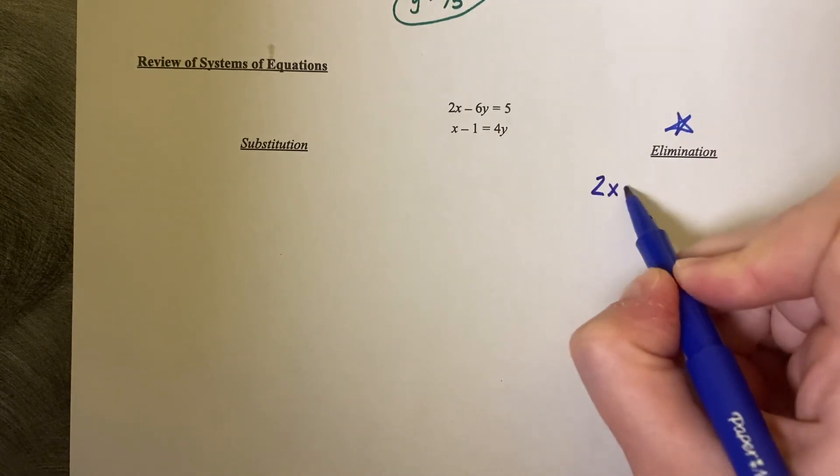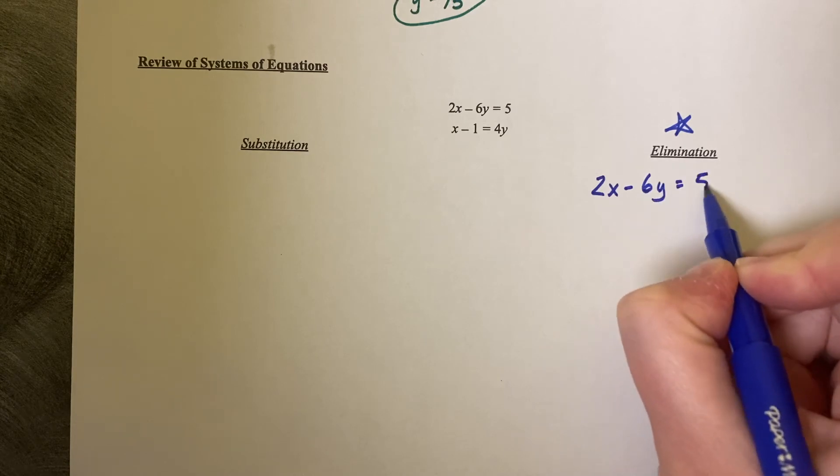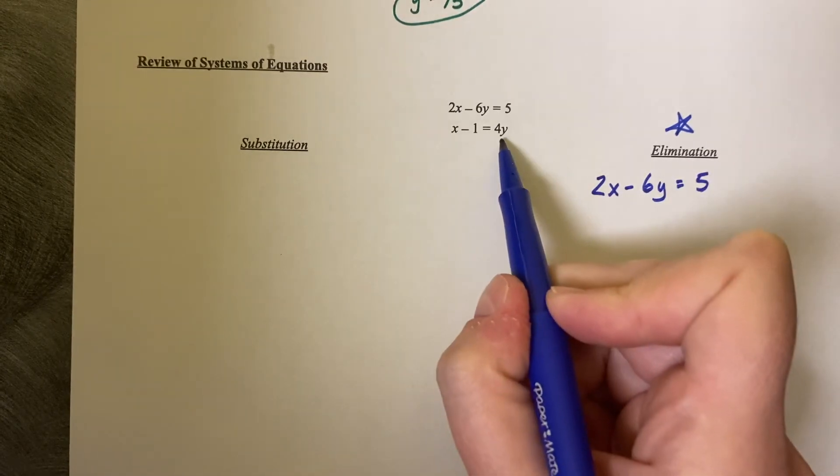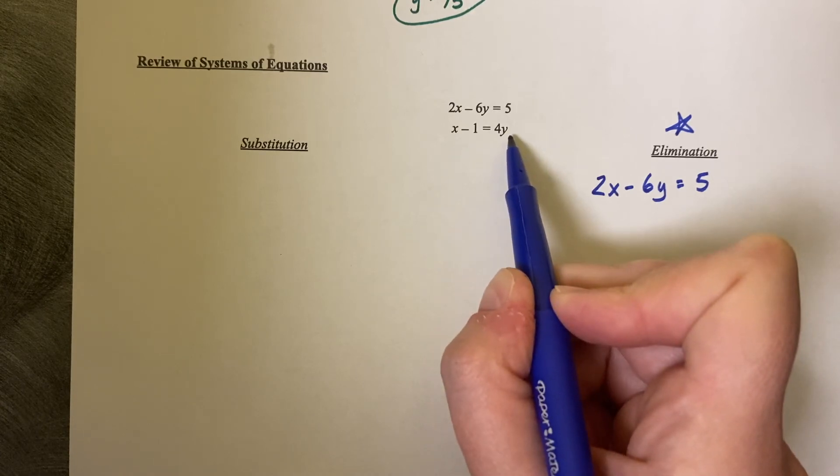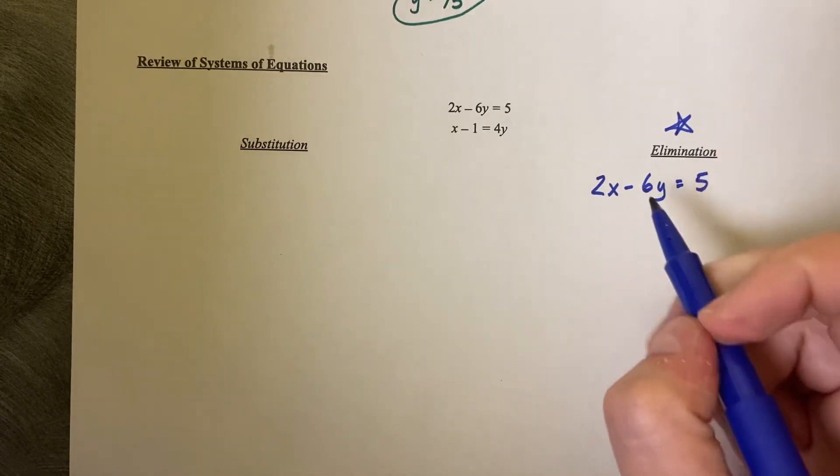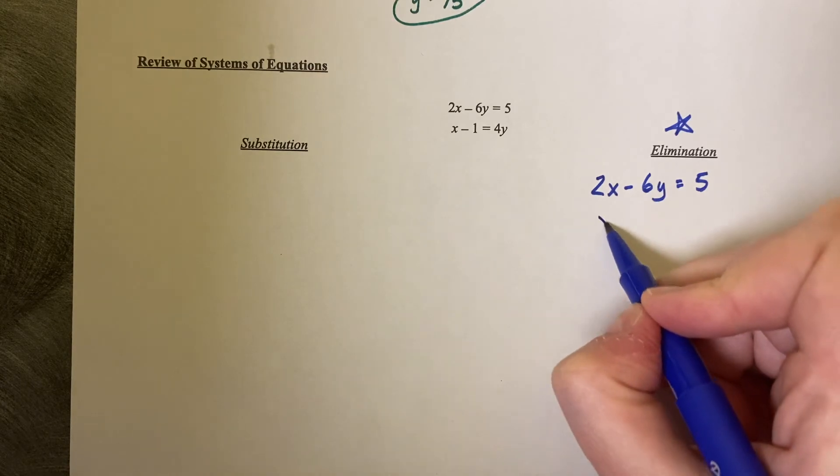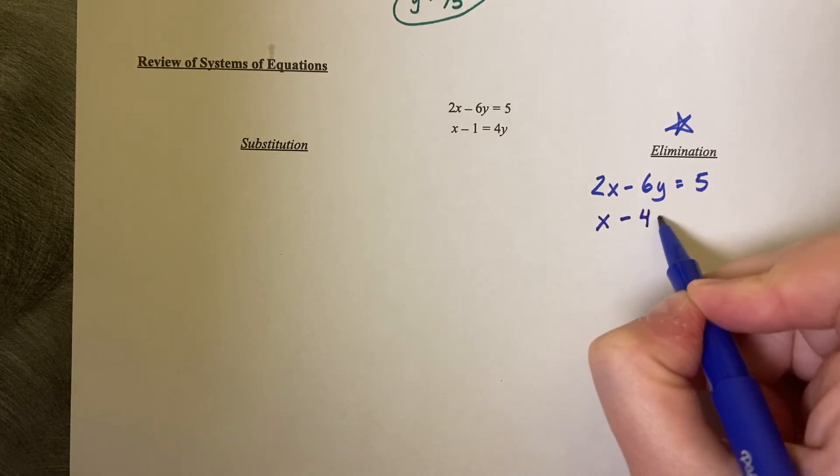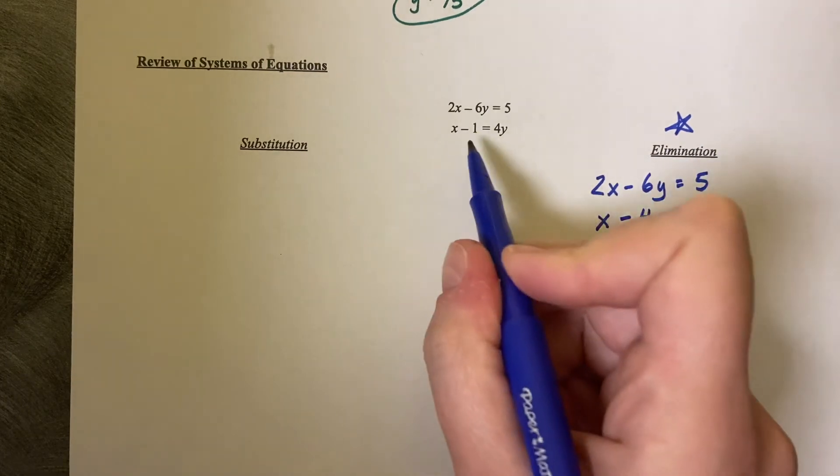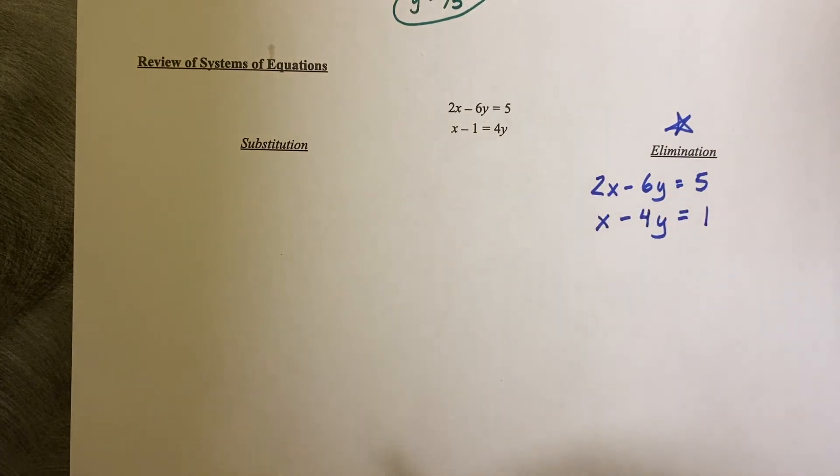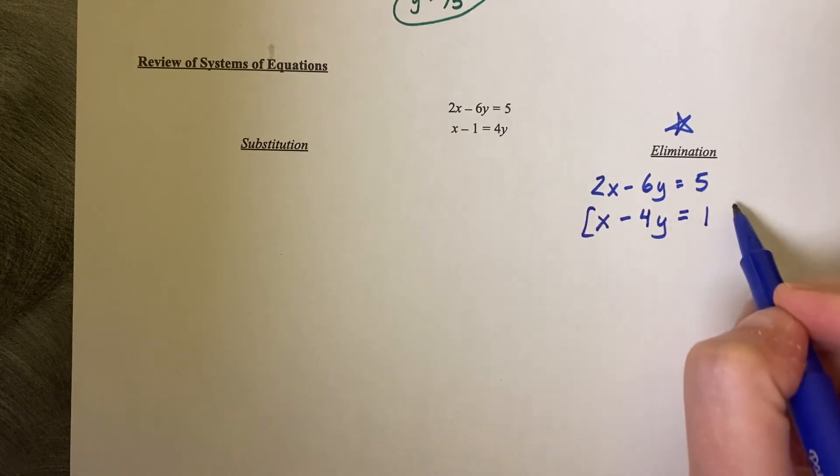So we've got 2X minus 6Y equals 5 and then to fix this I'm going to pull the 4Y to the left and the 1 to the right. Hopefully you can do that in your head. If not, you can write it out but it's going to be X minus 4Y because I moved the 4Y over equals a positive 1 because the 1 is going to the right. Now I want these to eliminate.